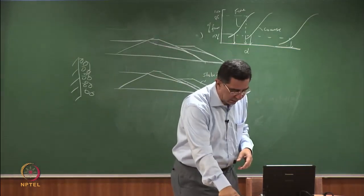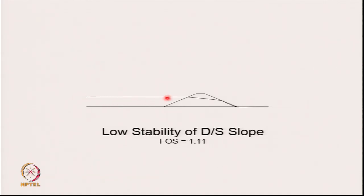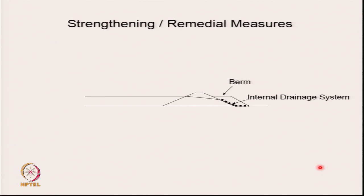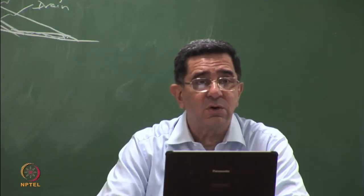Let us see what we do in the case where the factor of safety had fallen to 1.1. A stabilizing berm is made and an internal drain is provided, therefore the phreatic line does not reach the downstream face. Doing the stability analysis with the same problem and high phreatic line: with the stabilizing berm the phreatic line is caught and the factor of safety increases from 1.11 to 1.62. There is no wet downstream face and no low factor of safety.